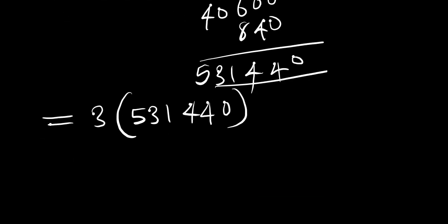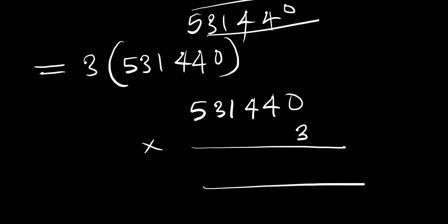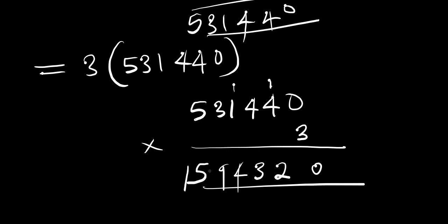Multiplying 3 times 531,440: 3×0=0, 3×4=12 (write 2 carry 1), 3×4=12+1=13 (write 3 carry 1), 3×1=3+1=4, 3×3=9, 3×5=15. The result is 1,594,320.